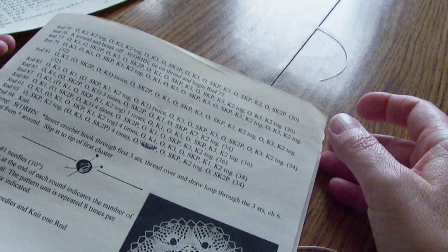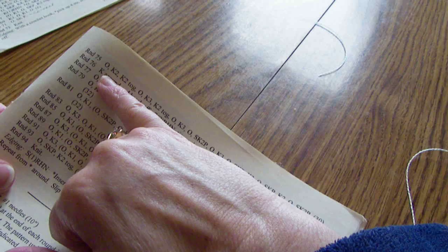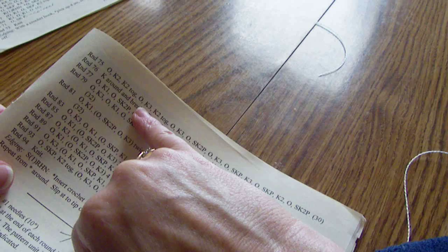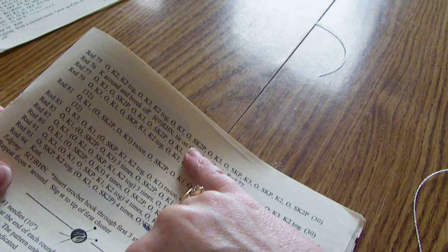Now, I did a yarn over, knit 2, knit 2 together, yarn over, knit 3, knit 2 together, yarn over, knit 3, yarn over, slip, knit 2 together, pass the slip stitch over.